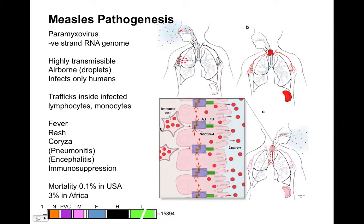Monocytes — particularly macrophages — are involved. Measles causes fever, rash, coryza, pneumonitis, encephalitis, and immunosuppression. Usually if death is associated, it's because of immunosuppression followed by a secondary infection. Encephalitis and pneumonitis are more uncommon; coryza is like common cold symptoms; the rash is the most distinctive part of the disease. In the US, mortality is 0.1%; in Africa it's about 3%. It's largely been controlled by vaccinations, though at the time of recording there's a measles outbreak in the US.